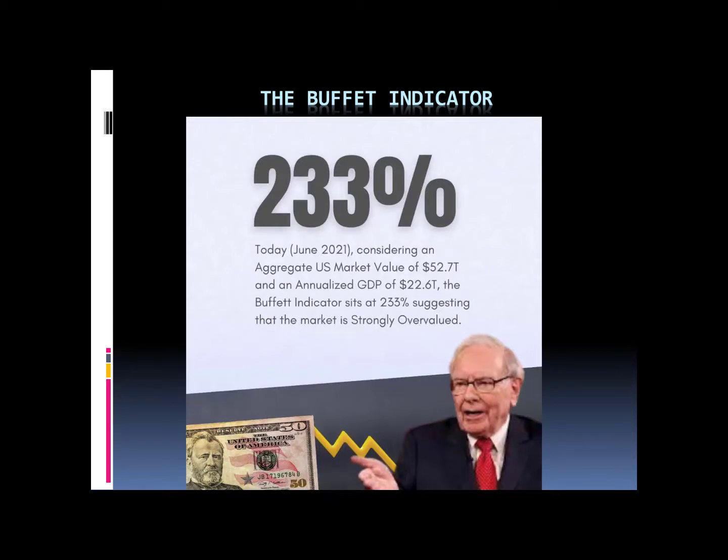Today, in June 2021, considering an aggregate US market value of 52.7 trillion dollars and an annualized GDP of 22.6 trillion dollars, the Buffett indicator sits at 233%, suggesting that the market is strongly overvalued. As we saw on the graph, it's really above the tech bubble of 2000 and well above the 100% threshold, which is already considered a really overvalued percentage.